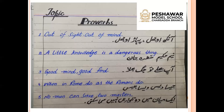The first proverb is: Urdu — 'Aankh ojhal, pahad ojhal.' English — 'Out of sight, out of mind.' Jab koi cheez hamare saamne nahi hoti hai toh hum se bhool jaate hain. When something is not in front of you, it goes out of your mind.